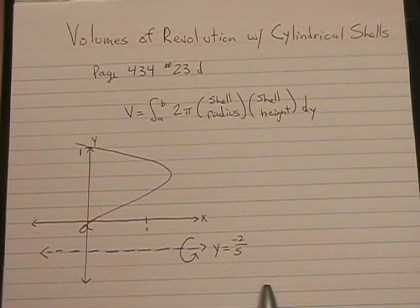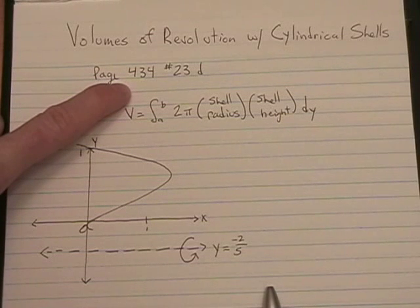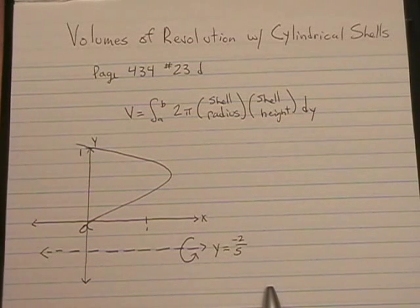What I want to do is go through the process for revolving an area about a horizontal line which is not the y-axis, and it happens to be the problem from page 434, number 23d.